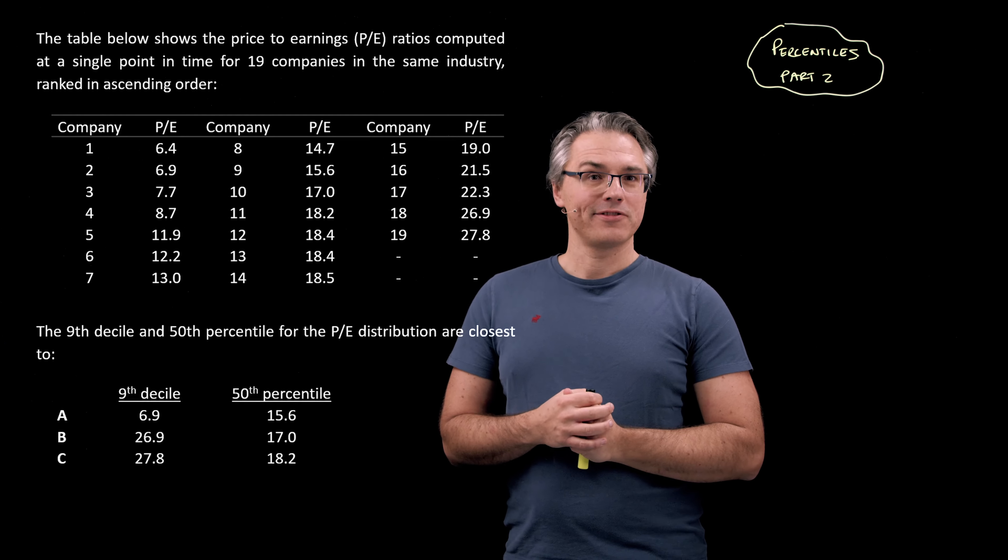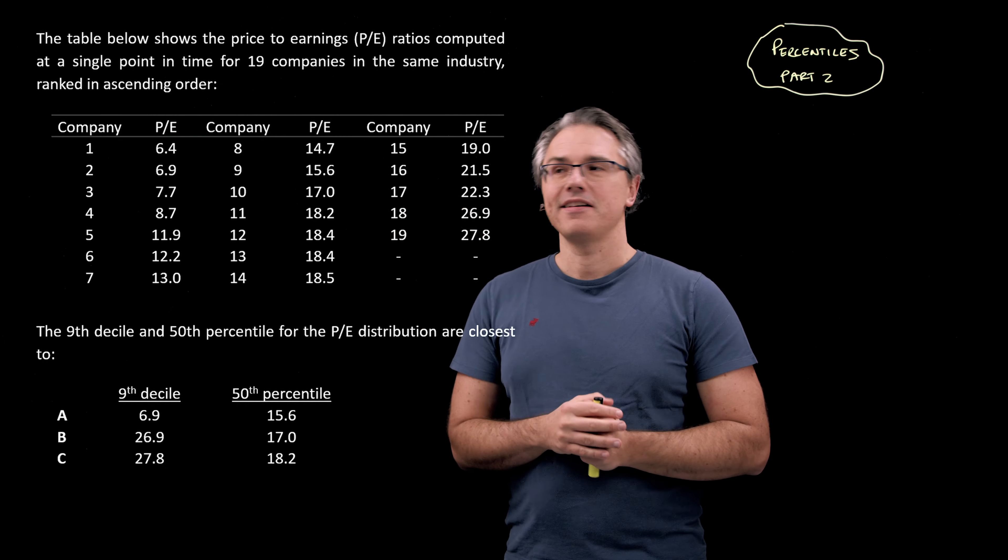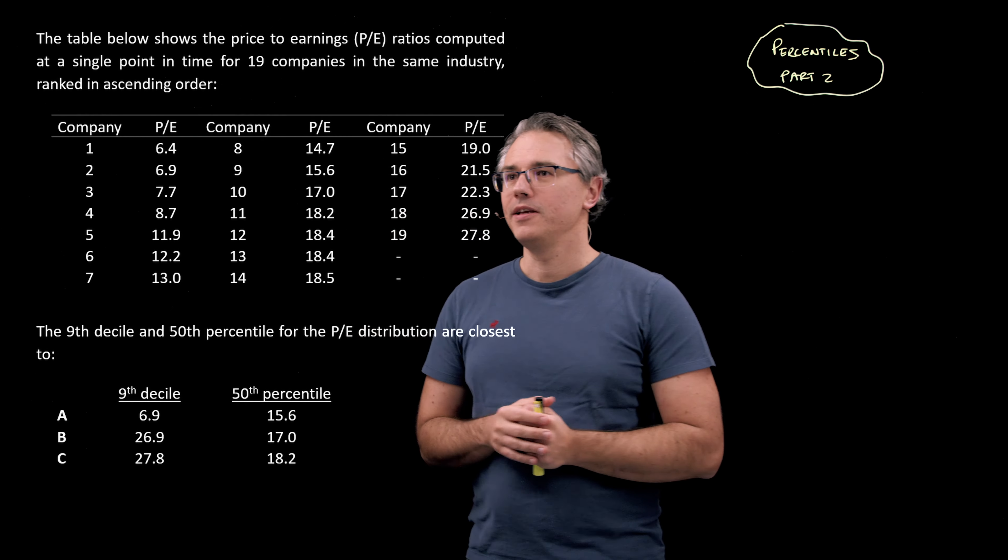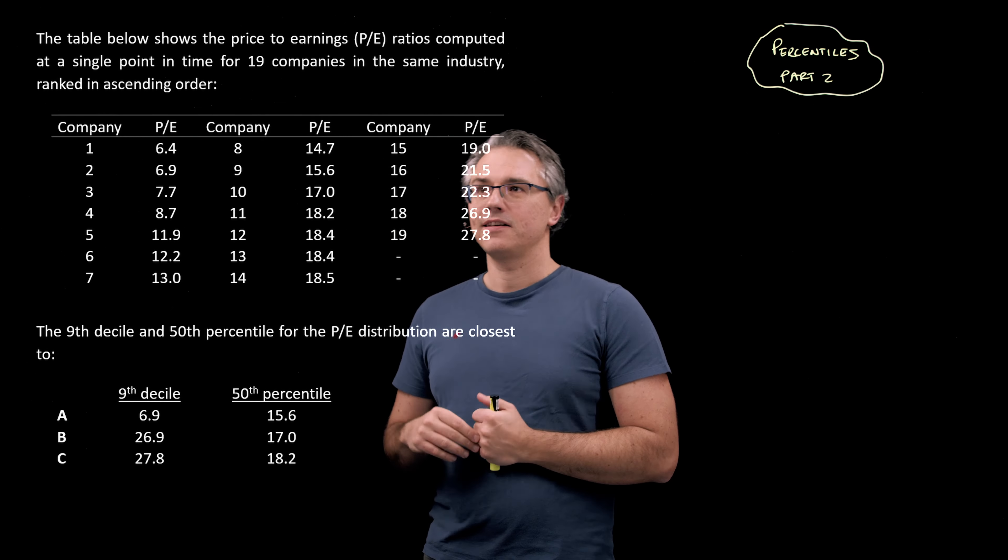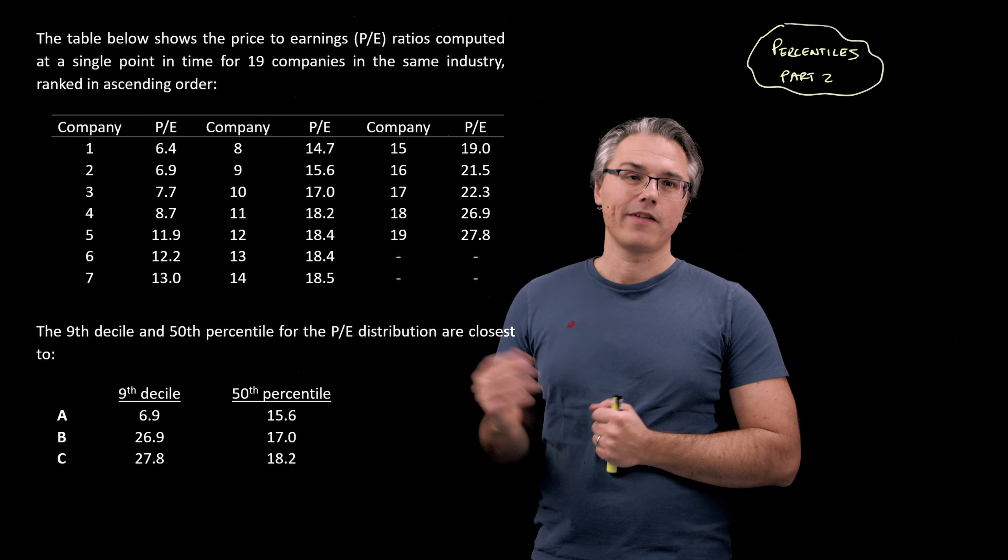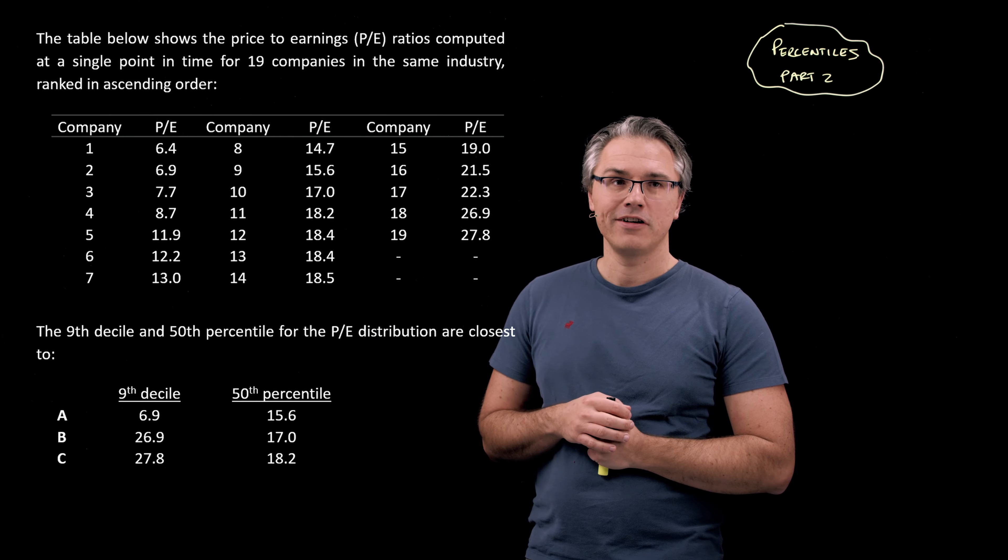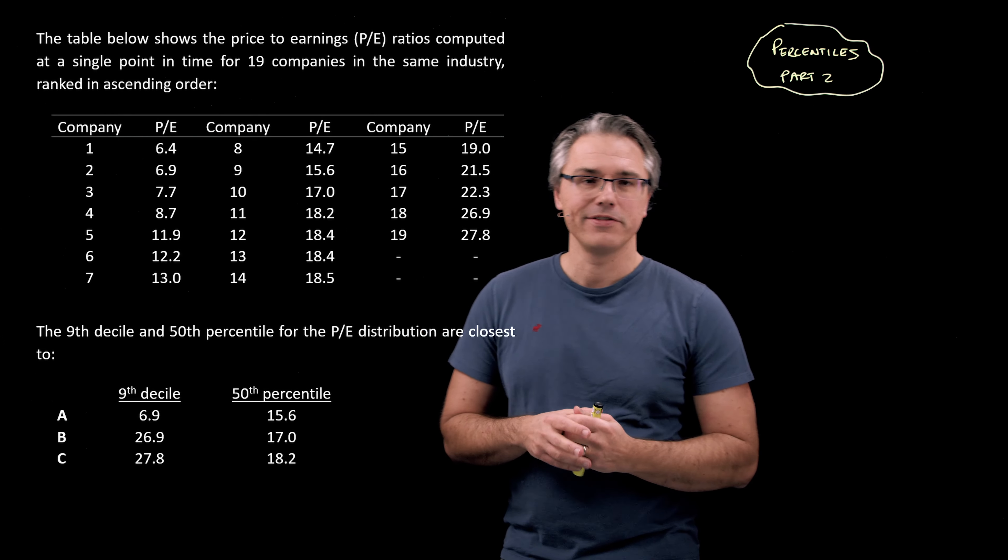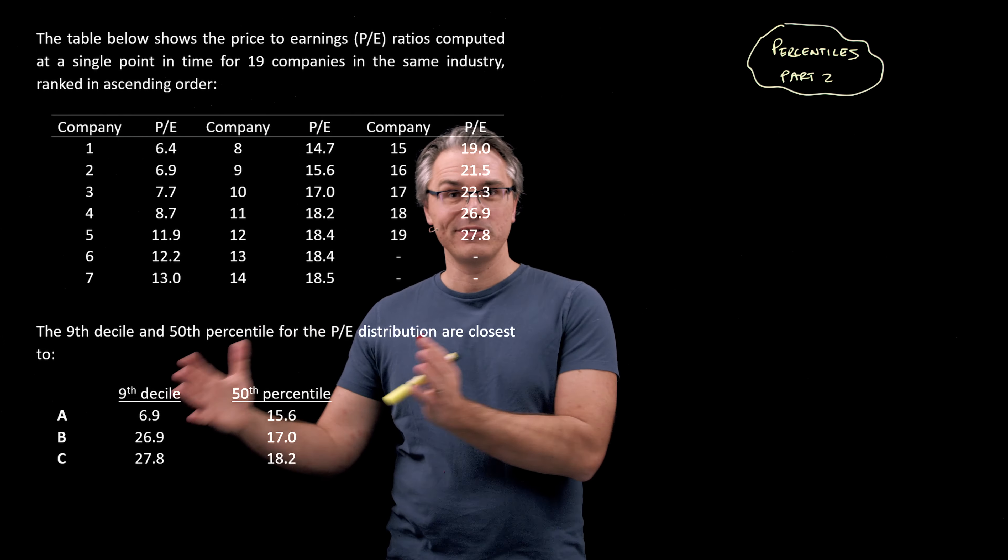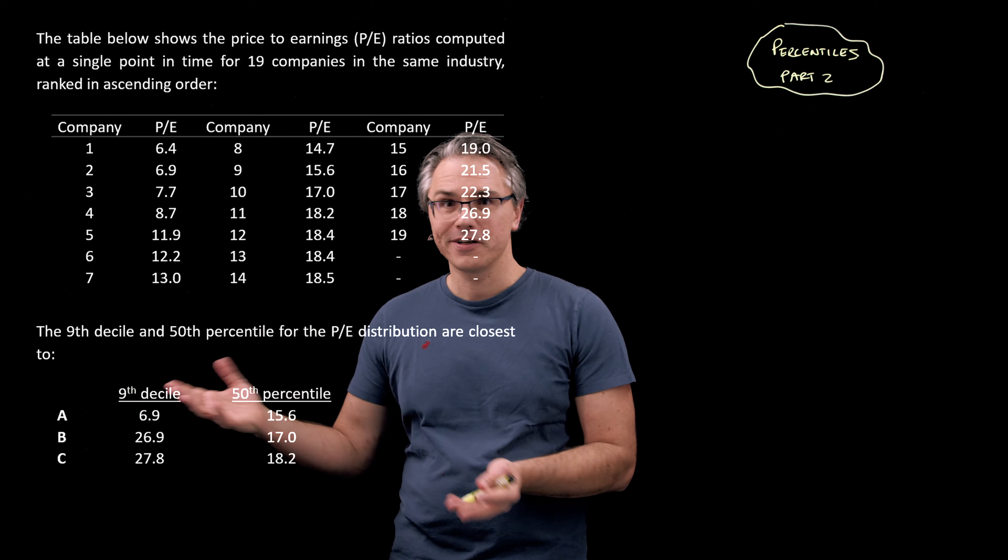That's the question that I'm going to solve with you. Same data as before. So a table showing data on P/E ratios from different companies arranged in ascending order, which is critical. If it's not arranged, you would have to do it yourself. However, in the exam, you probably wouldn't have time. And I guess the examiner wouldn't give you such a tough question where you would first need to arrange things in order before you can do any solving.